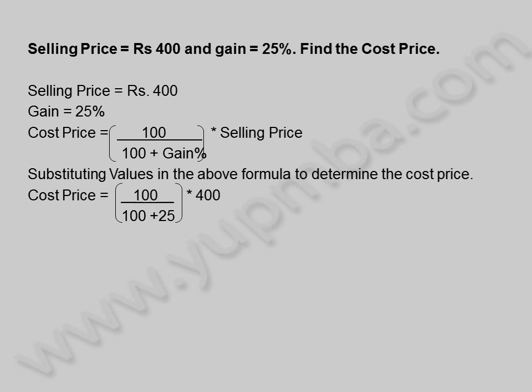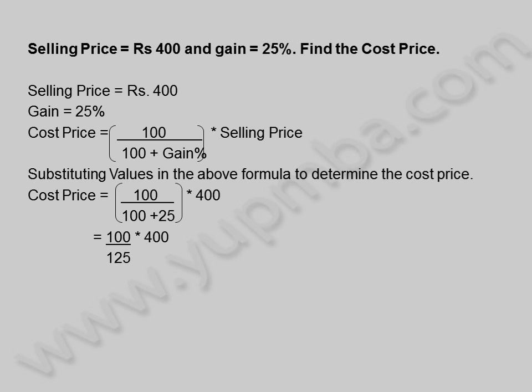Cost Price is equal to 100 divided by (100 plus 25) into 400, which is equal to 40,000 by 125. Cost Price is equal to 320 Rupees.